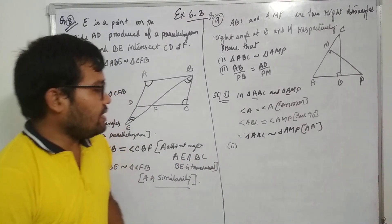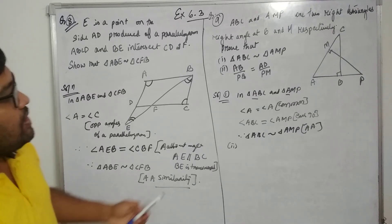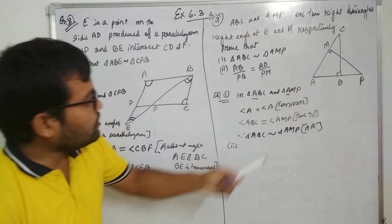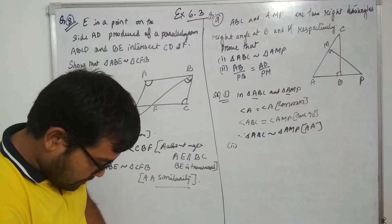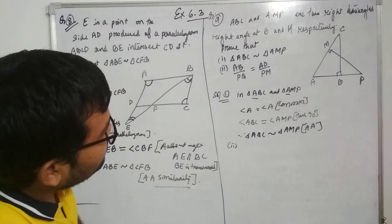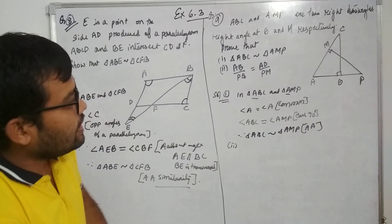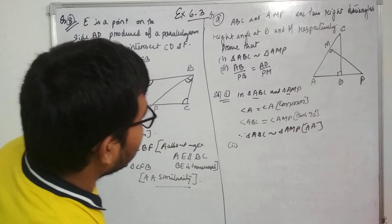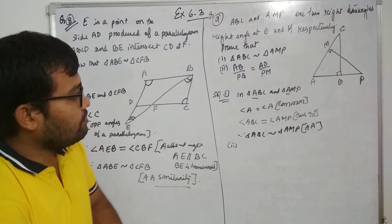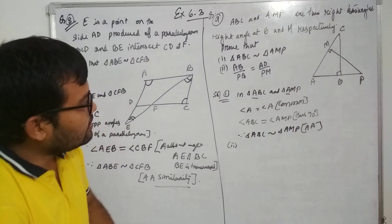Triangle ABC is similar to triangle AMP and we need to prove AB by PQ and AB by PQ, AMP and PM by AB.